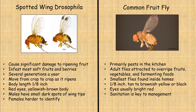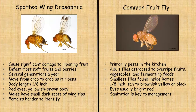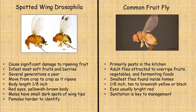Anyone who grows berries or soft fruit has probably come across the spotted wing drosophila — a fruit fly that causes significant damage to ripening fruit. They infest most soft fruits and berries, and unfortunately there are several generations a year. Once one crop is done, they move to the next — from strawberries to blueberries to blackberries as things ripen. Their body length is only about an eighth of an inch long, with red eyes and yellowish-brown bodies. The males have small dark spots on their wing tips, which is why they're called the spotted wing drosophila. This is distinct from the common fruit fly, which is primarily just a kitchen pest and not as destructive.